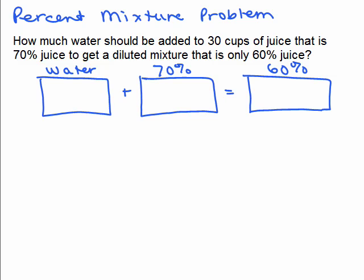How much water should be added to 30 cups of juice that is 70% juice to get a diluted mixture that is only 60% juice?